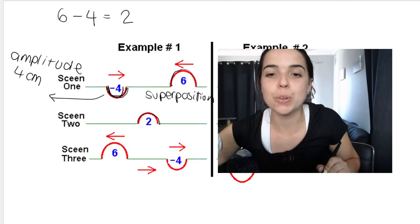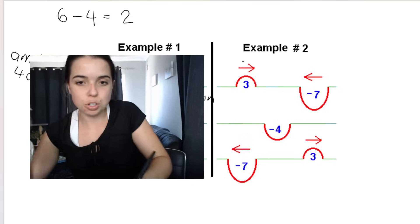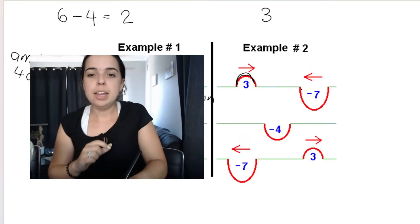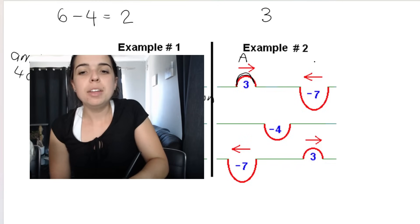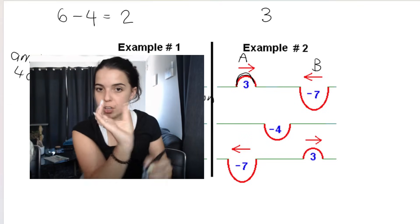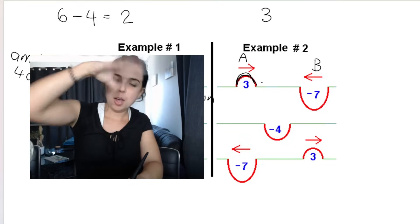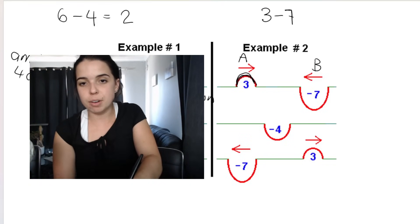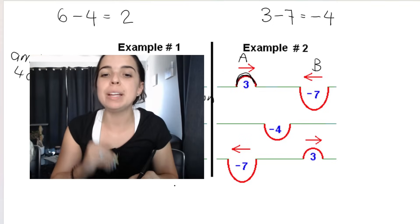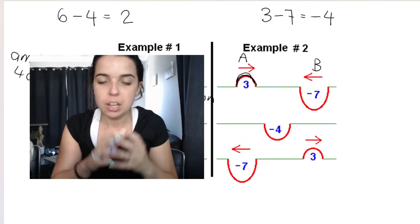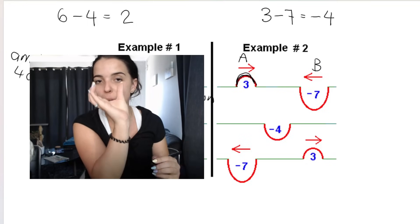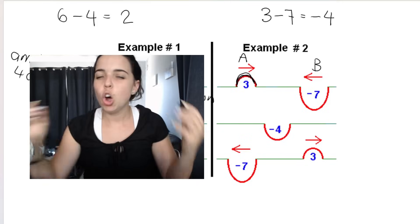For example two, pulse A is a crest with an amplitude of three centimeters, so we write positive three. It meets pulse B, which has an amplitude of seven centimeters, but because it's a trough, we write minus seven. Three minus seven equals minus four. The resultant pulse during superposition is four centimeters, but downwards — a trough.